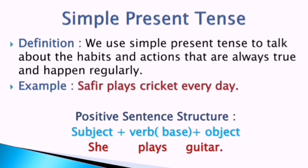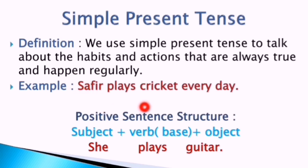Simple present tense — first, we need to know its definition. We use simple present tense to talk about habits and actions that are always true and happen regularly. For example: 'Safir plays cricket every day.' This means that boy, Safir, usually or regularly does this action. This is what simple present tense is used for. We can get three types of structures: positive, negative, and interrogative.